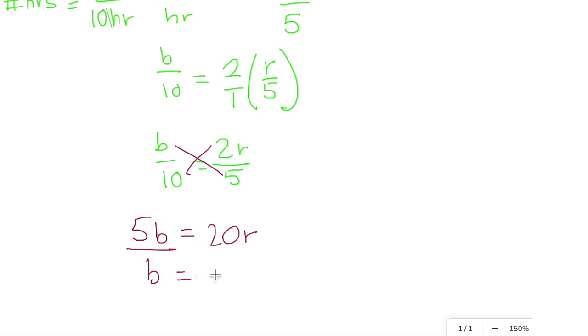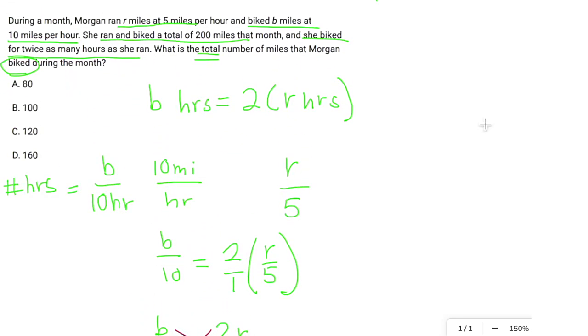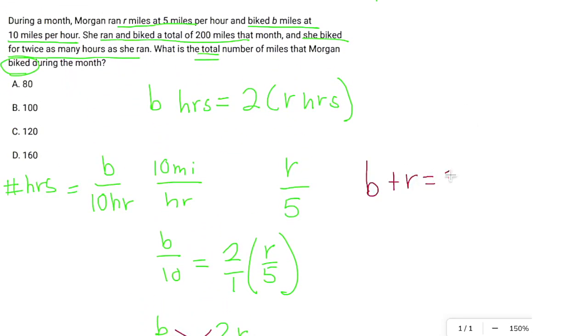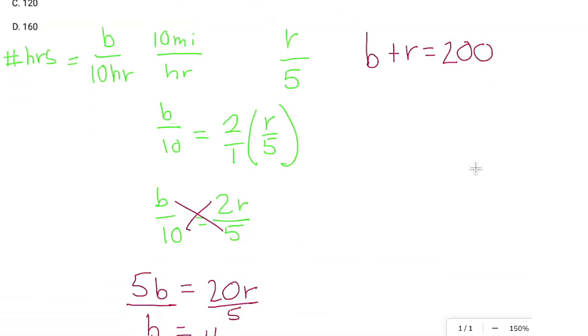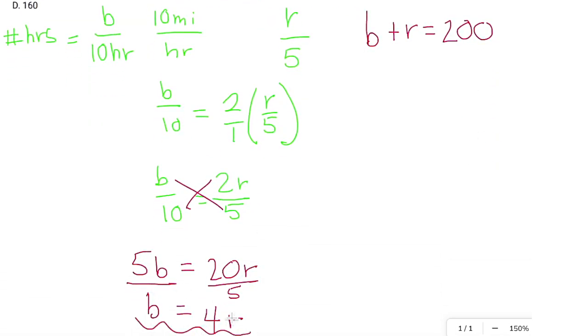So B is equal to 20 divided by 5 is 4R. So now we have a relationship between B and R. So we go back to our B plus R equals 200. We do a little substitution with B equals 4R. So I'm going to substitute 4R for B. 4R plus R is 5R. And we want to isolate R. And R equals what's 200 divided by 5? 4. Make sure to add that extra 0. 40.